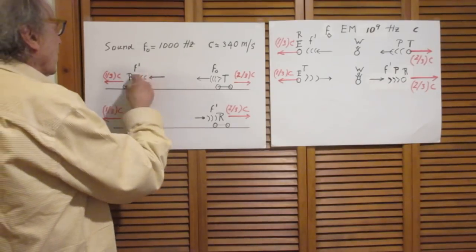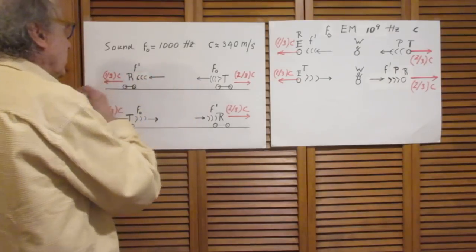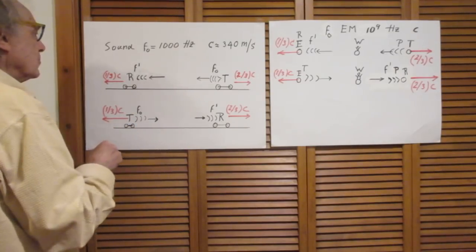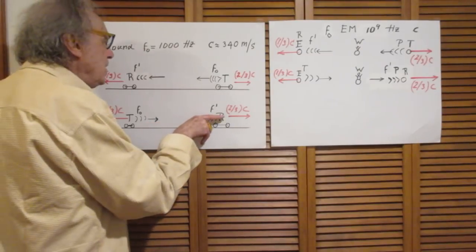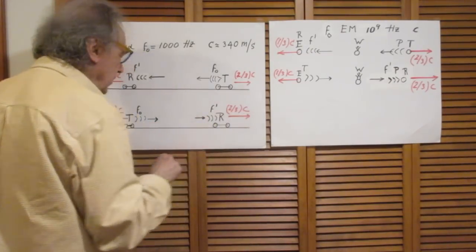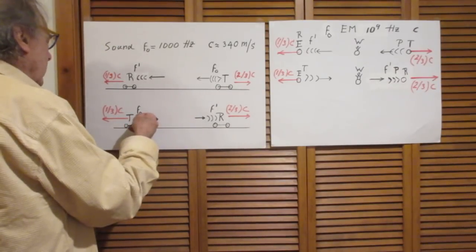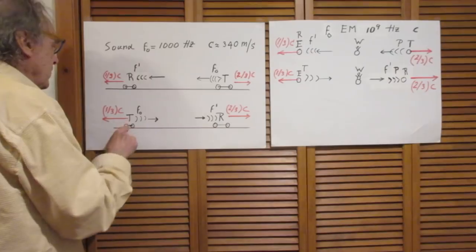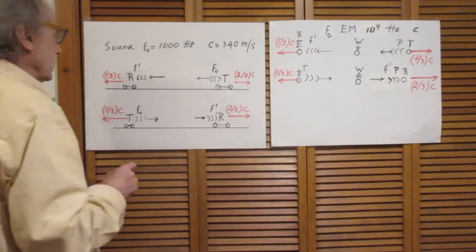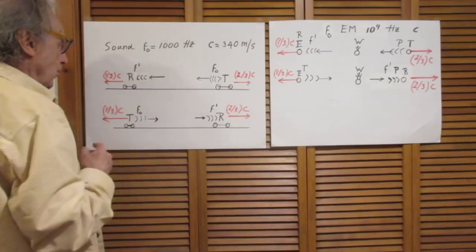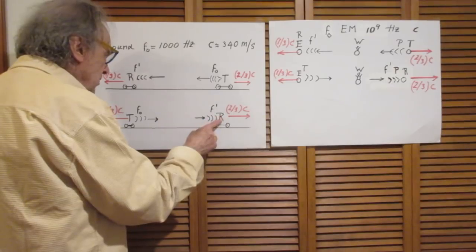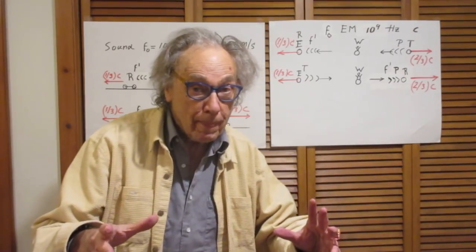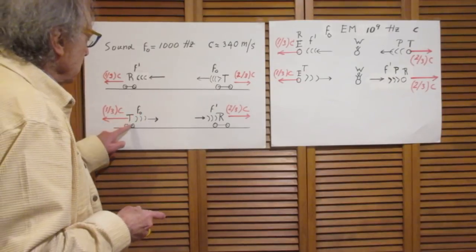Now, by the way, T stands for transmitter, it transmits the sound, and R stands for receiver. So the sound leaves here and arrives here. Now I'm going to reverse the roles. I'm going to make this car the transmitter and this car the receiver. So the receiving car is now going with two-thirds the speed of sound in this direction and the transmitting car is now moving with one-third the speed of sound in this direction.